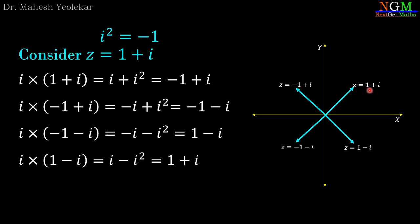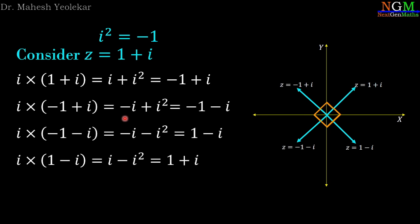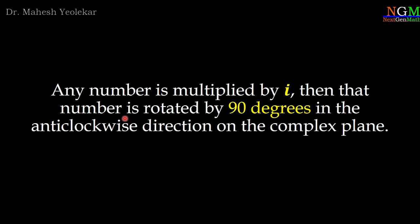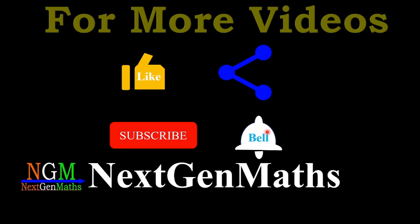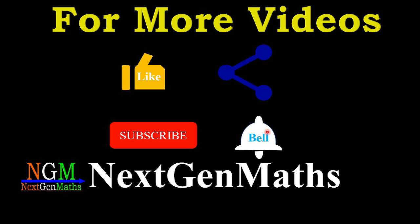Here we can easily observe that when we multiply z = 1 + i by i, the number is rotated by 90 degrees. Similarly, when we multiply any number by i each time, that number is rotated by 90 degrees in the anticlockwise direction. That means the geometrical meaning of complex number i is: if any number is multiplied by i, then that number is rotated by 90 degrees in the anticlockwise direction on the complex plane. For more such videos, please like, share, subscribe and press the bell icon of NextGenMass.